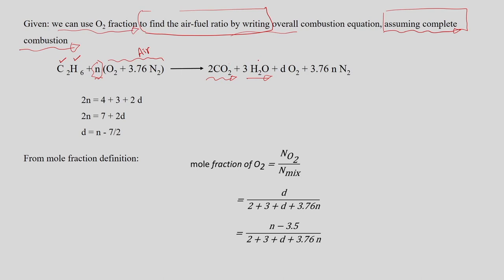The equation also includes oxygen released in the flue gas (given as 3 mole percent) and nitrogen not participating in the reaction. Balancing carbon gives 2 C on each side (2 CO2 in product), and balancing hydrogen gives 6 H, so 3 H2O in the product.